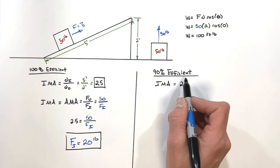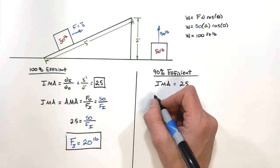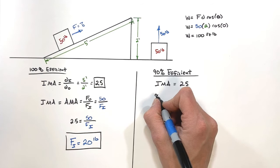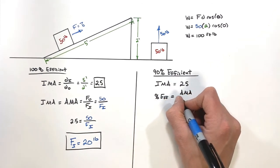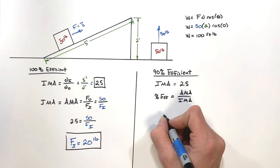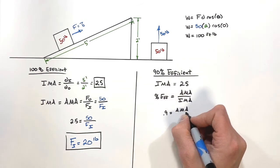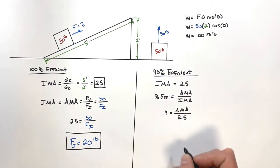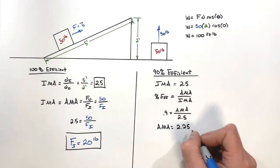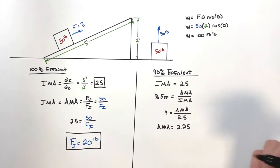What does change is the AMA. Because the ramp is only 90% efficient, I cannot say IMA equals AMA. Using the equation: percent efficiency equals AMA over IMA, we substitute 0.9 equals AMA over 2.5. Solving, the actual mechanical advantage equals 2.25 — not all that grossly different from 2.5, but they are not the same.